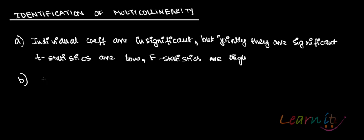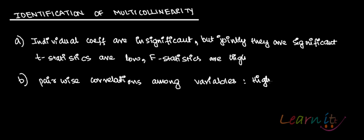Next is you run the correlation, that is pairwise correlation among variables. You run the pairwise correlation among variables and if you find that those are very high then again this could be the sign of multicollinearity.